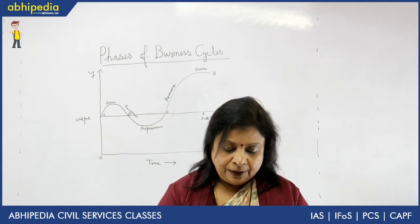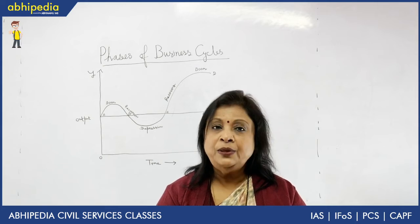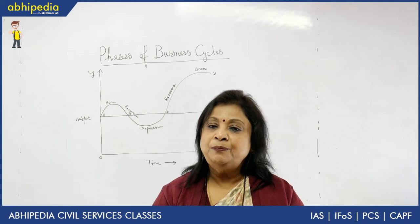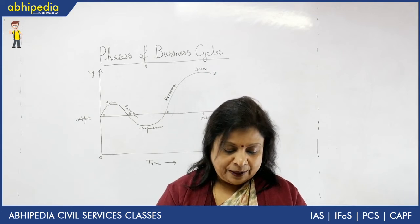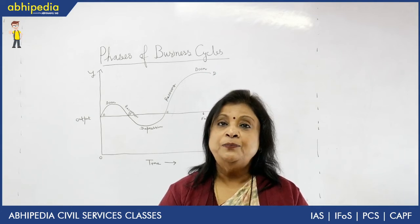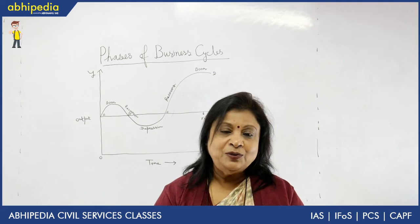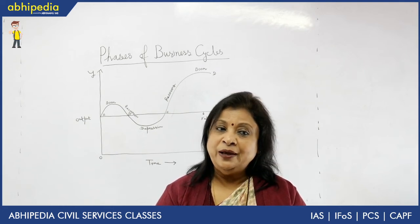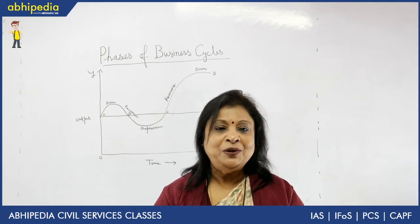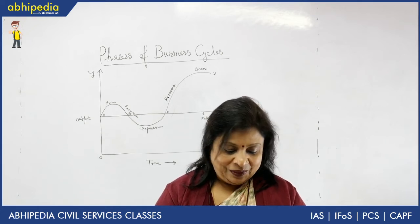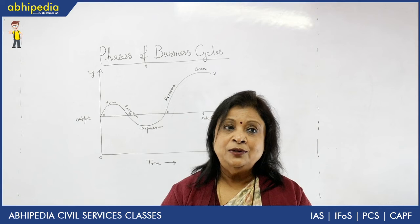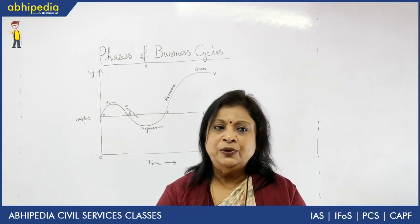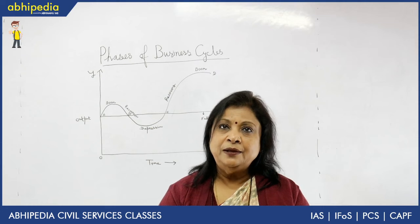Discretionary measures are specially designed to control the various phases of the business cycle. One is taxation policy: during boom, the rate of tax will be high; during deflation, the rate of tax will be low. Another tool is public expenditure, which the government uses to control different aspects of the business cycle.